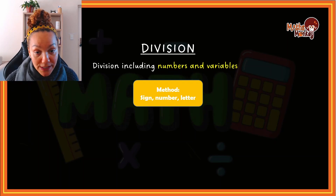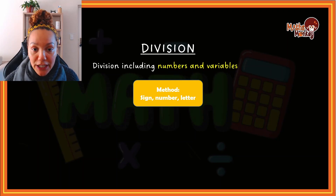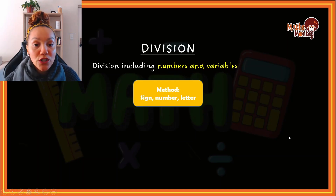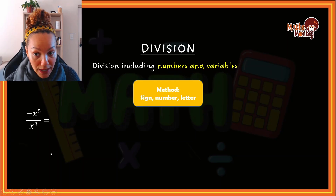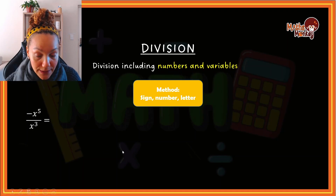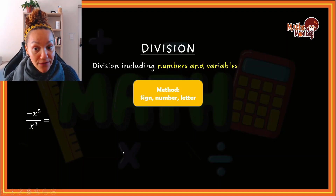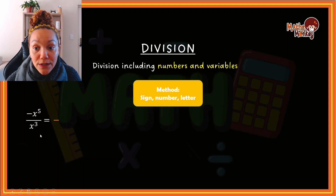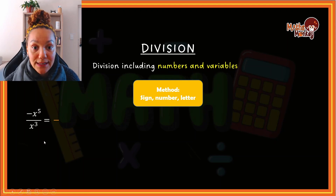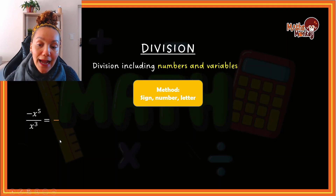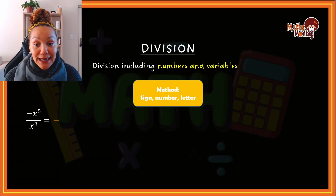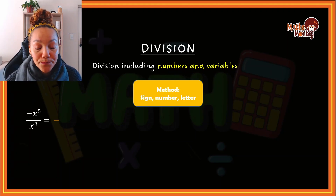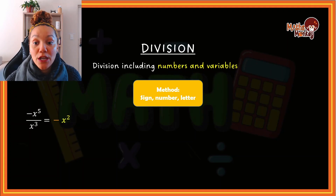The method we're going to use is the same method used in multiplication: sign, number, and letter. Starting with a basic question — I always start with the sign first. Here that's a negative divided by a positive, and because they are different the answer is a negative. Then I look at the numbers — there are no numbers that are not powers in this question. Then I work with the letters.